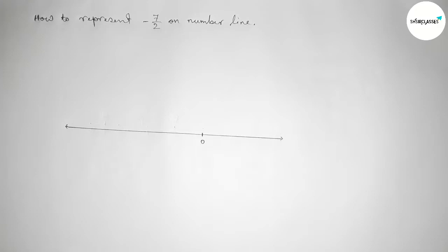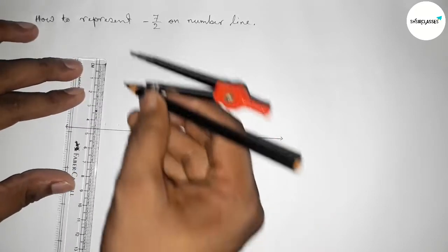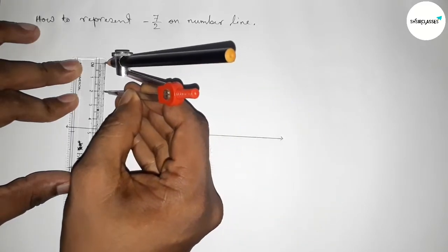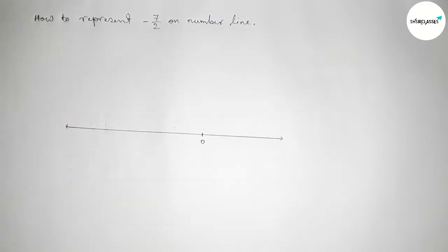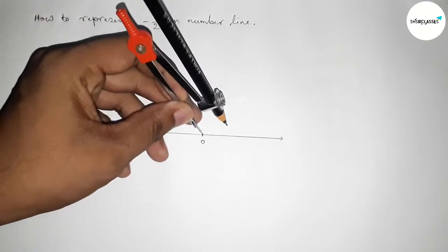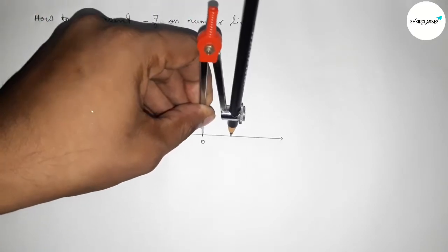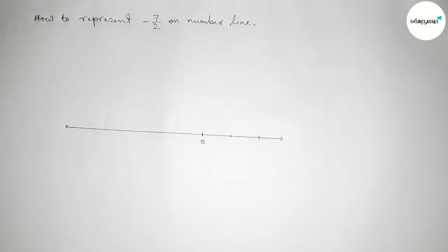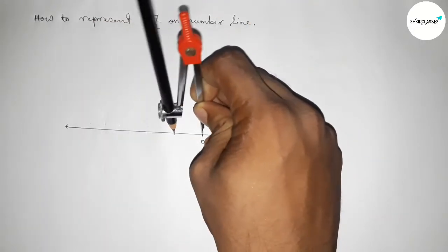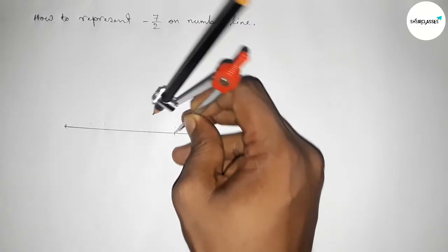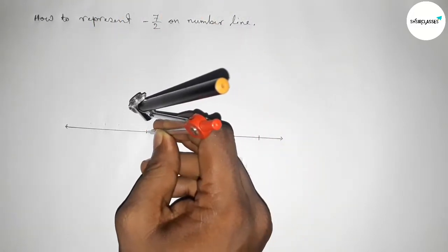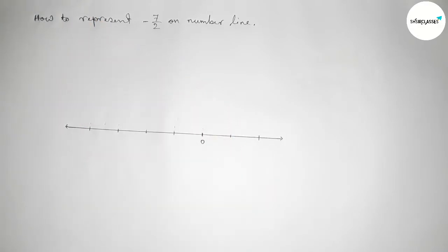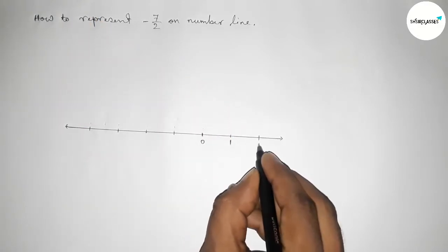Next, taking a length by using scale. So taking here two centimeters by using compass, by this way. And now putting the compass on the point zero here and cut here. So first we have to mark the numbers on the line by using compass. By this way, then we can get a number line.